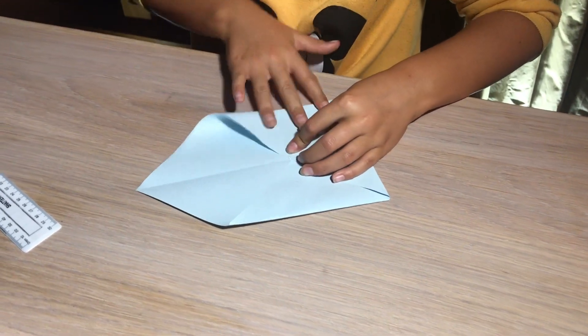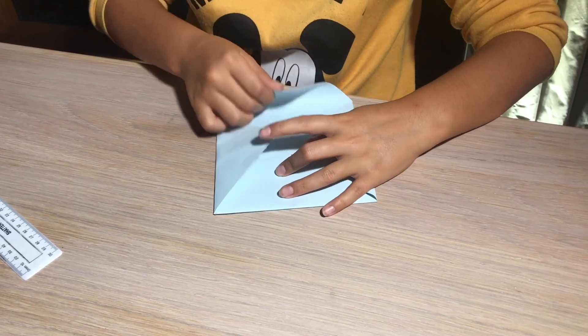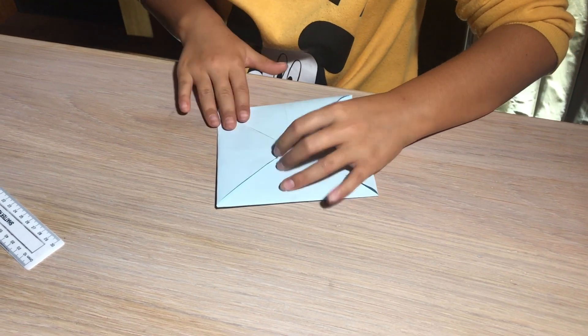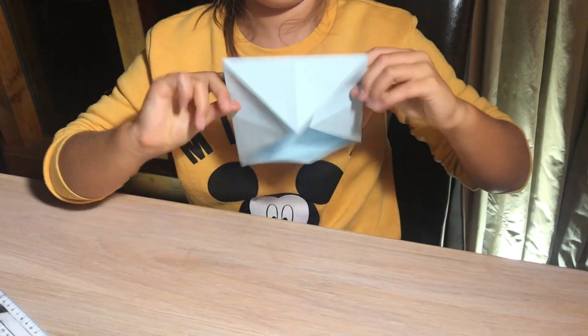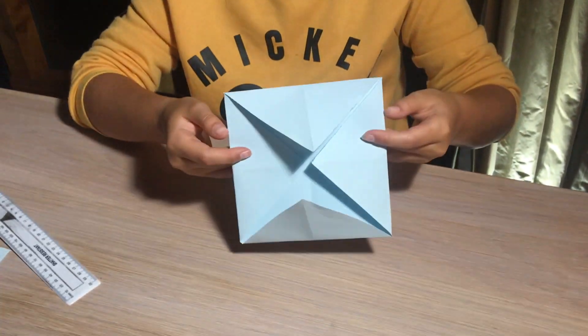Until you get a shape, something like this. Then you turn this over so it goes like that. And this is on the bottom.